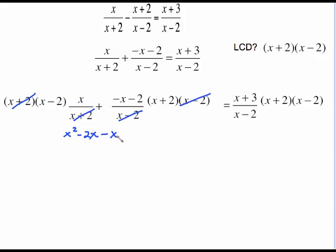This is binomial times binomial which means I need to FOIL that. So the first term will be negative x squared. Going across the outside is negative 2x. The inside is another negative 2x. Negative 2 times 2 is negative 4. On the right side the x minus 2s cancel. FOIL this out is x squared plus 5x plus 6.